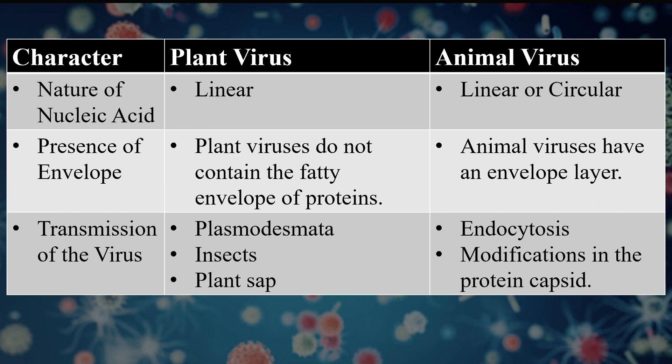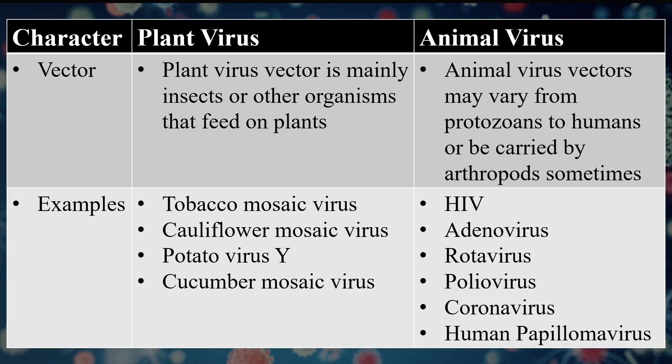Transmission of plant viruses occurs through plant sap, insects, or plasmodesmata — intracellular channels which facilitate movement of molecules like photosynthetic products, proteins or other nutrients between cells. In case of animal viruses, transmission can occur through endocytosis or by modifications in the protein capsid, which result in uncoating of the protein capsid and release of the viral genome into the host cell. The vector for plant viruses is mainly insects or organisms that feed on plants, while for animal viruses the vectors may vary from protozoans to humans, or may be arthropods.